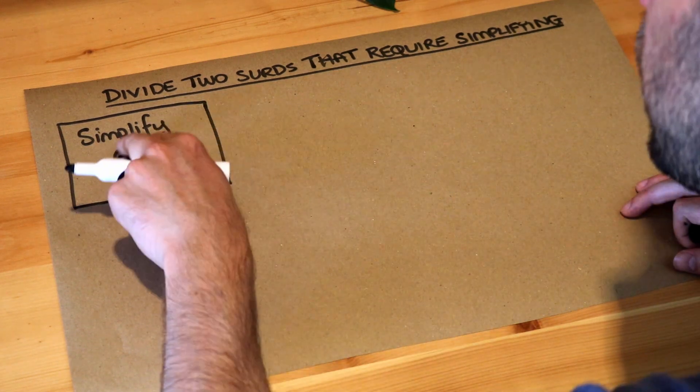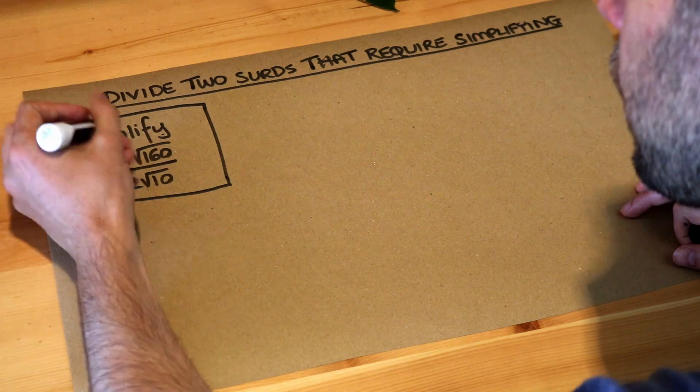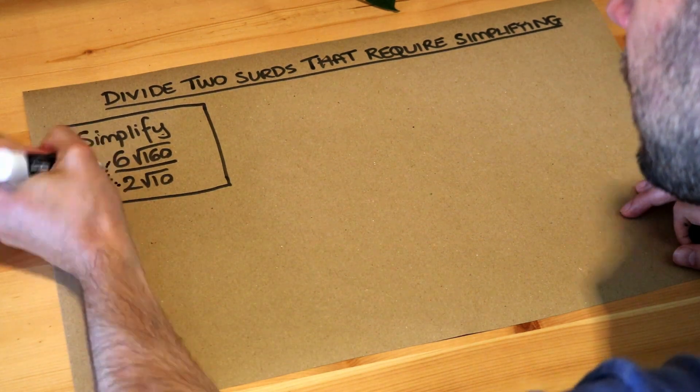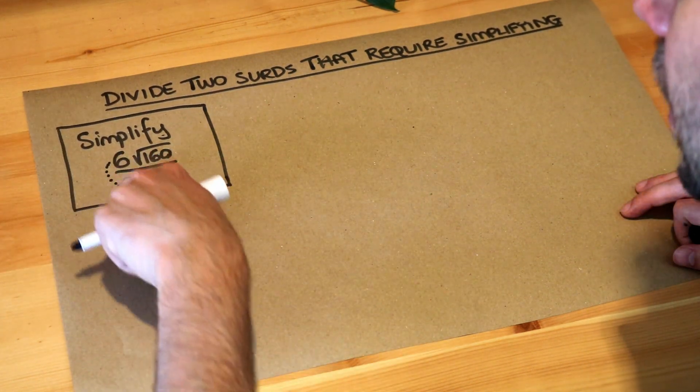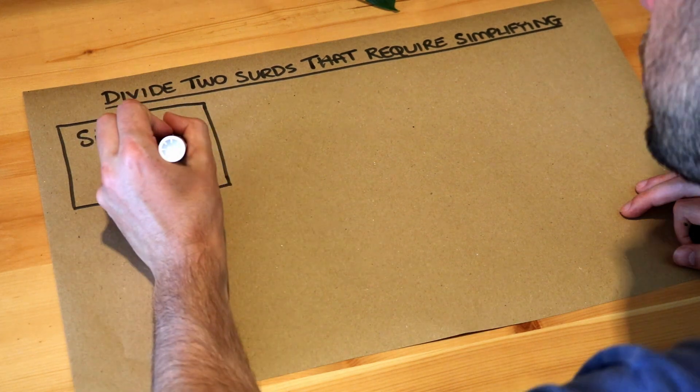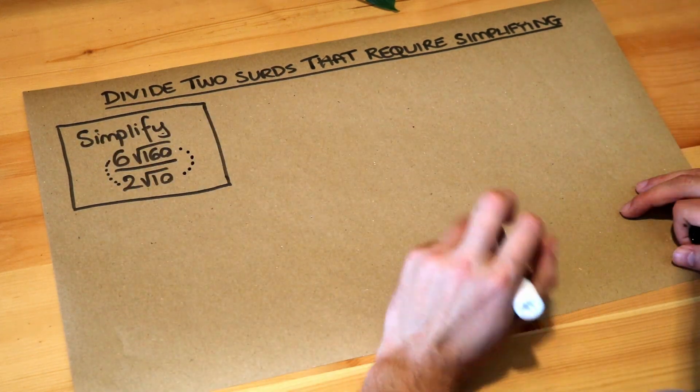Now in general when you divide two surds you can divide the non-surdy things, so the 6 and the 2, they're non-surds, they don't have a square root over it, and you can divide the surds and you can do that separately.